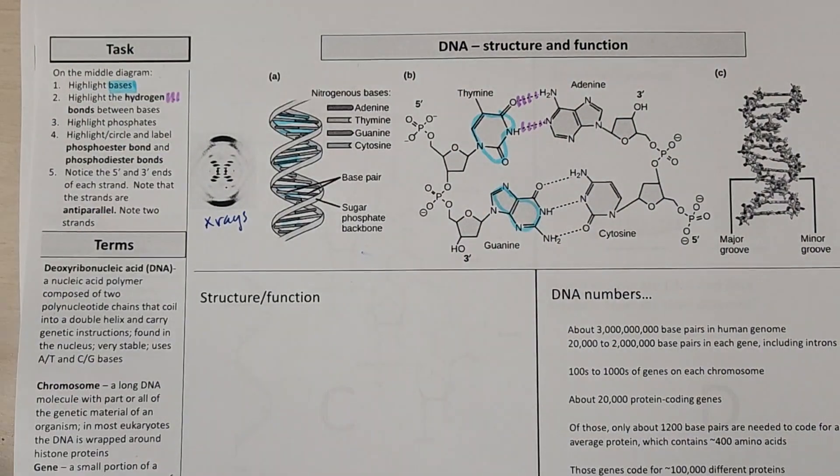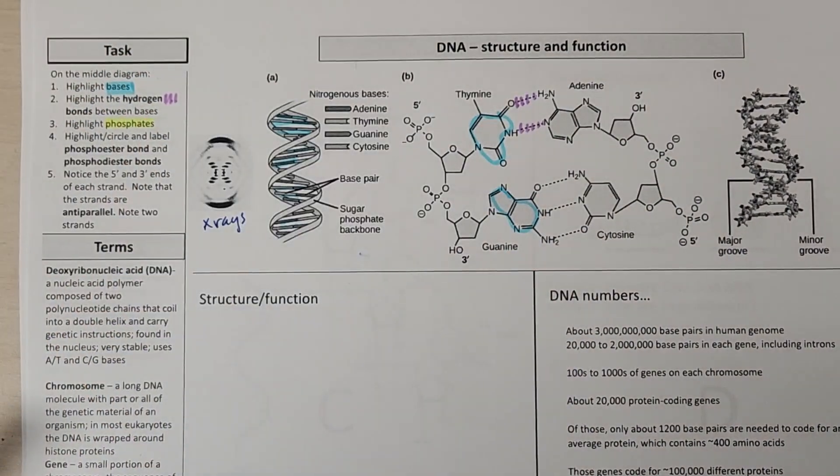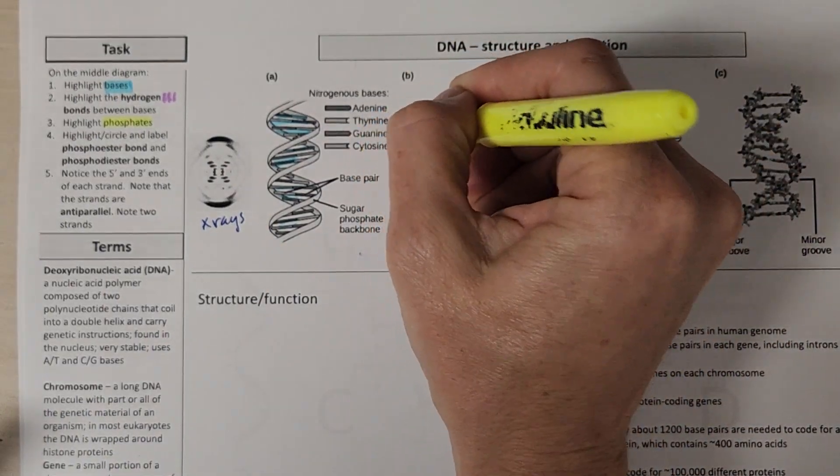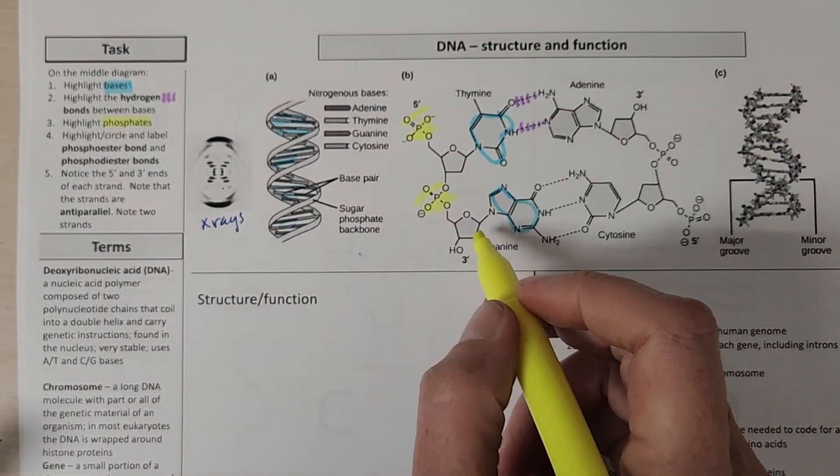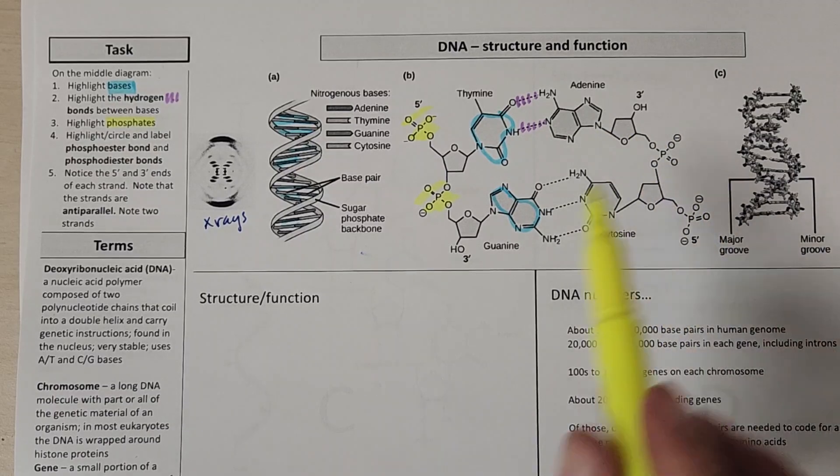We can also highlight the phosphates. So phosphates, remember, are in the backbone. It goes phosphate, sugar, phosphate, sugar. And I'm leaving you some work to do over here.